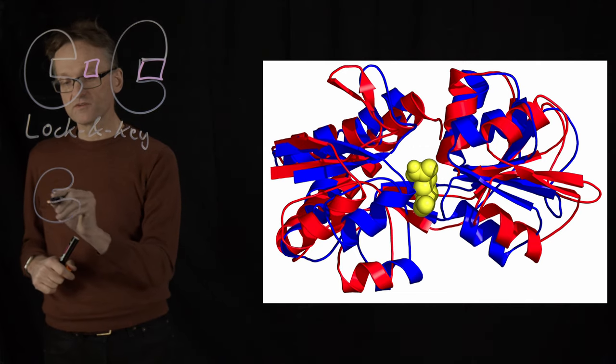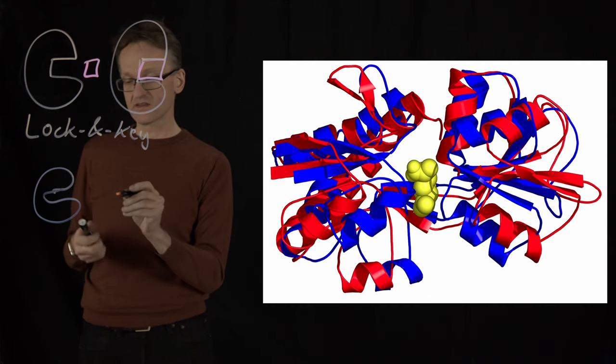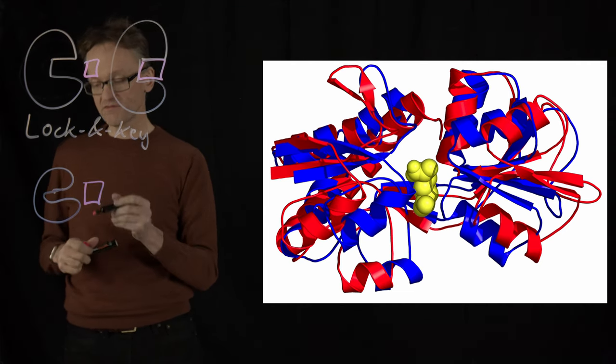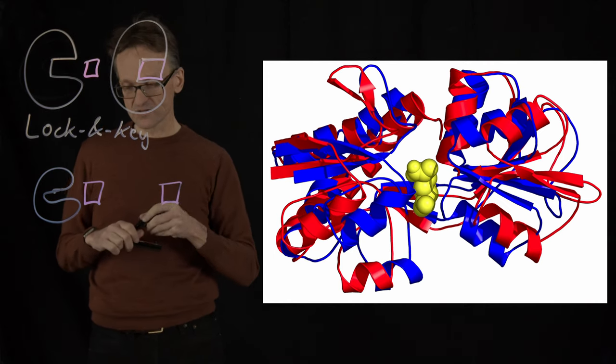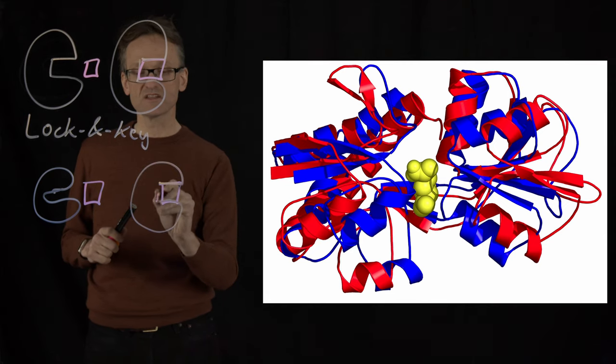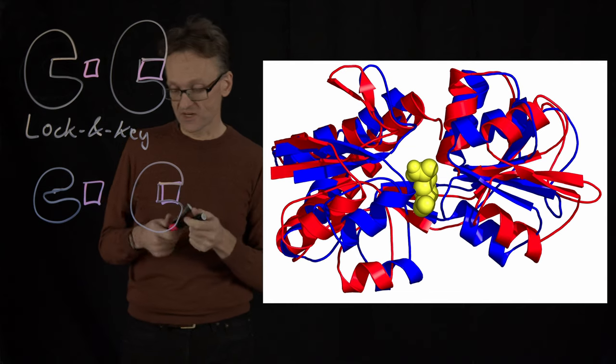Induced fit would correspond to having a protein that maybe has a spherical interior or something. And then we have that square molecule. That molecule is not going to fit. However, if I force that molecule, the square molecule into the protein, the protein might then change its shape so that it would induce a conformational change.